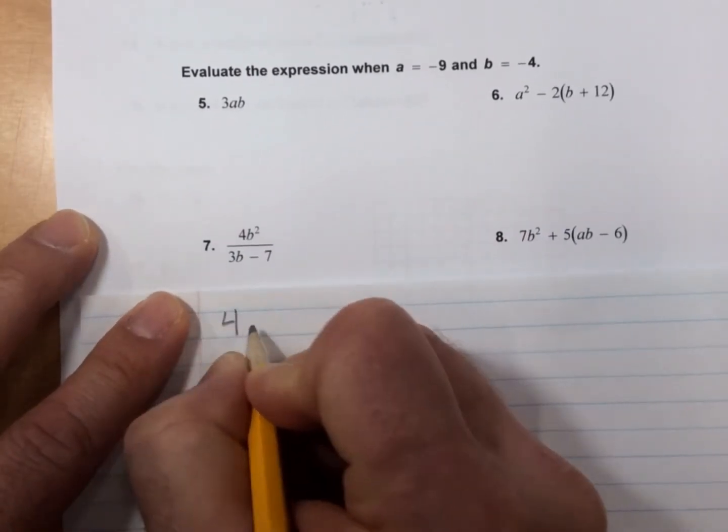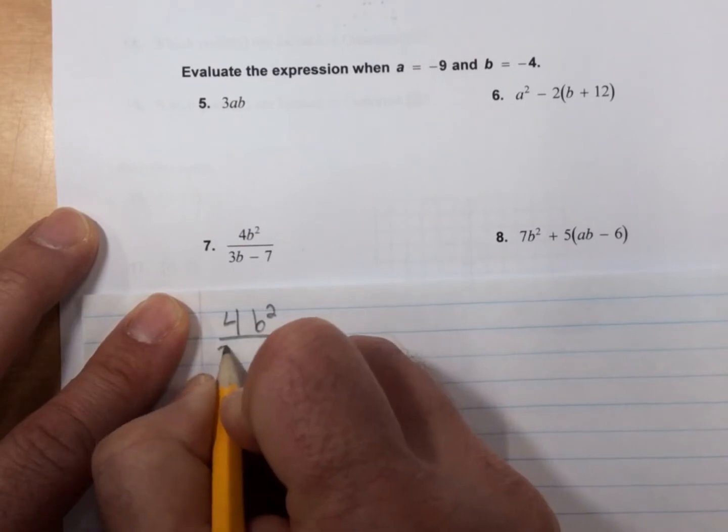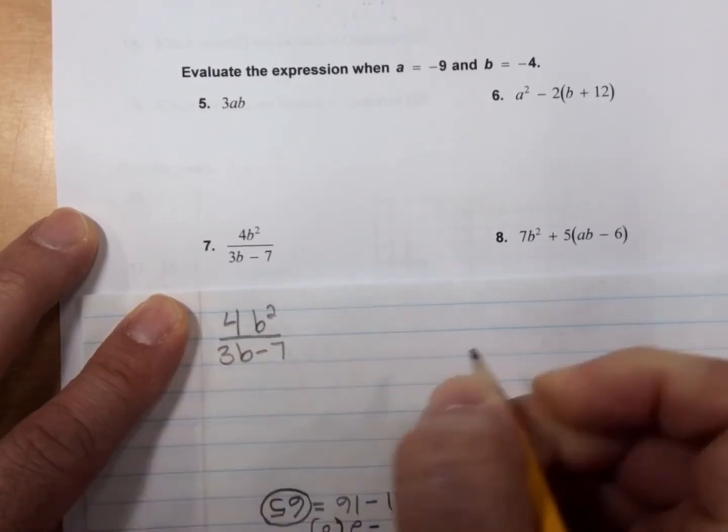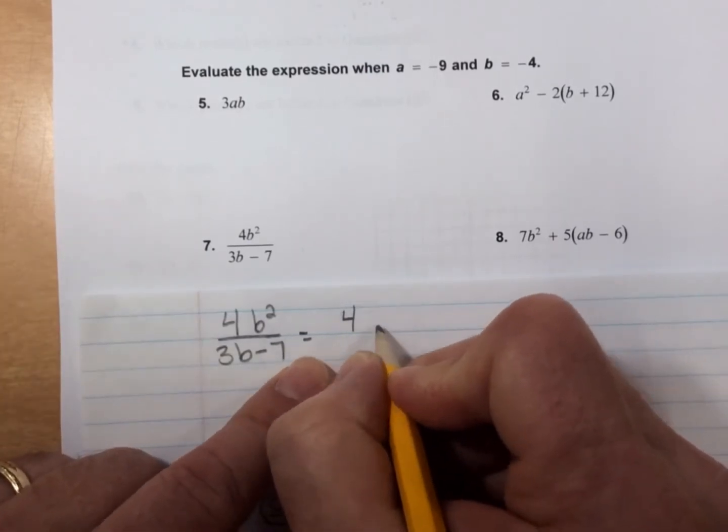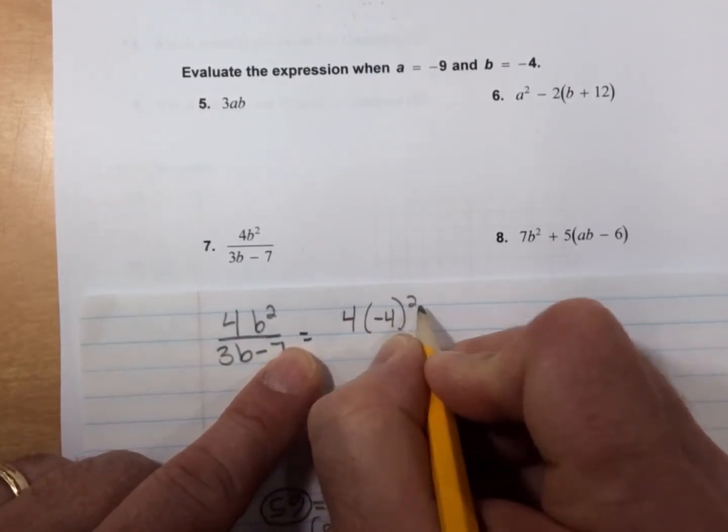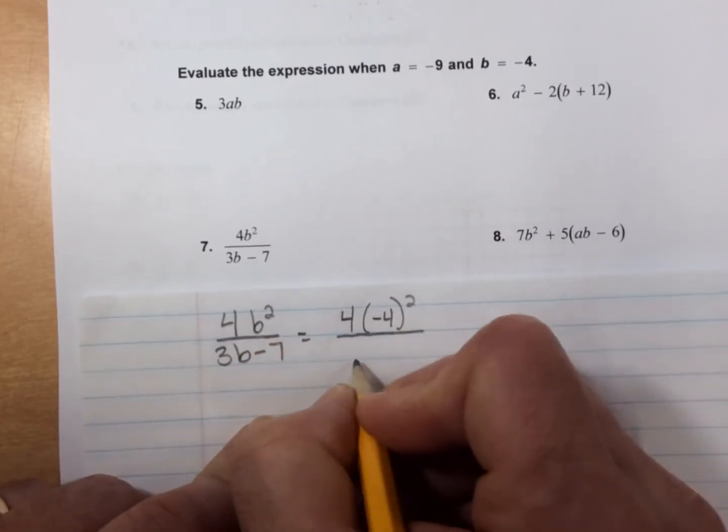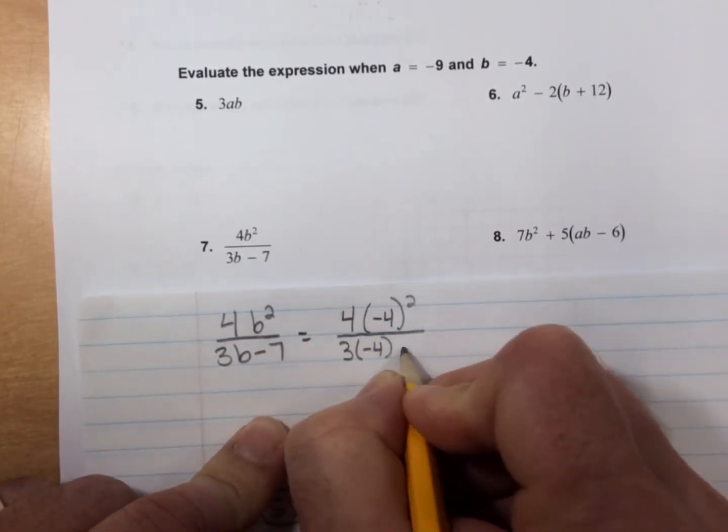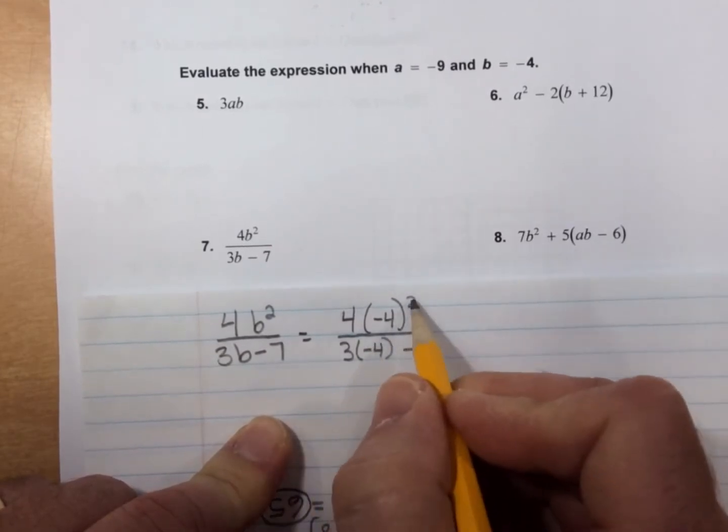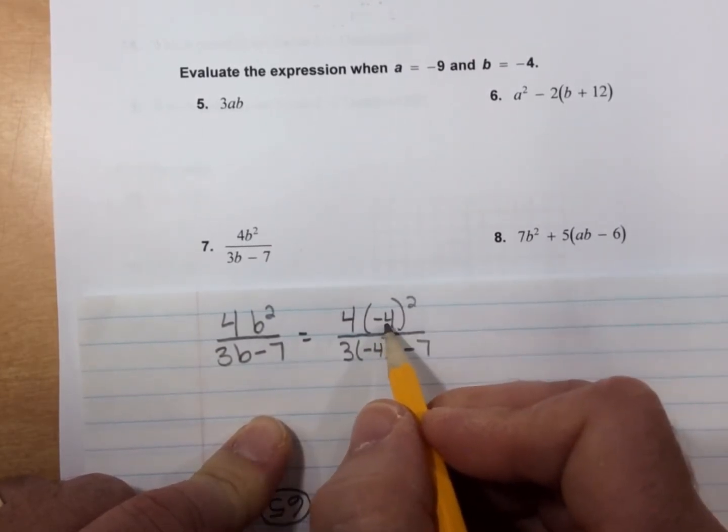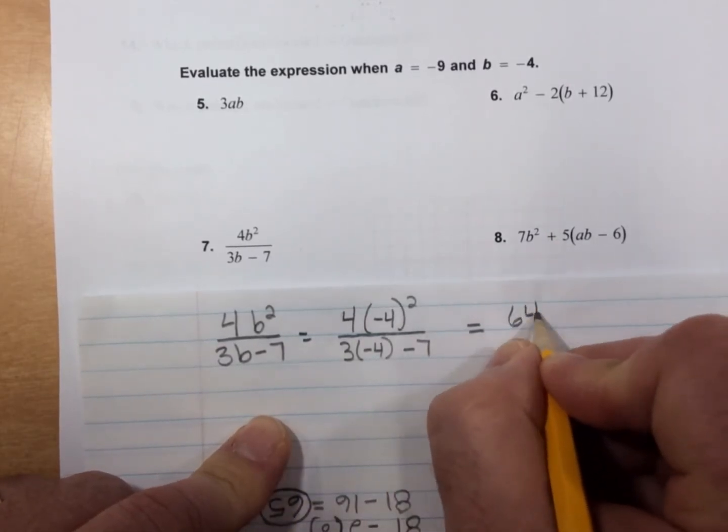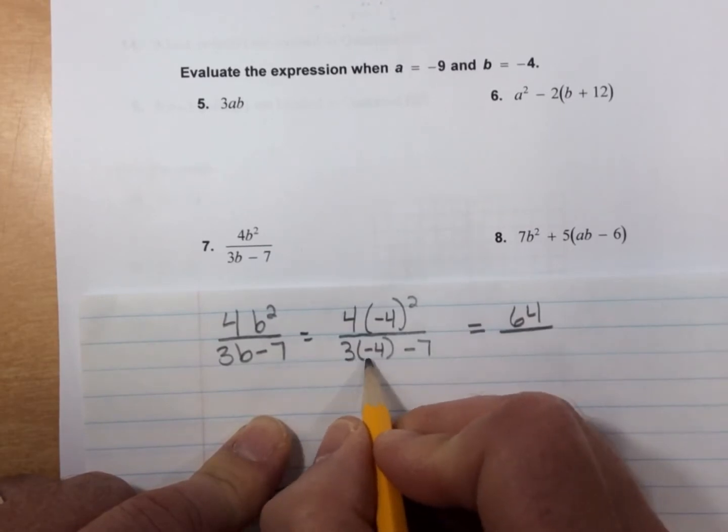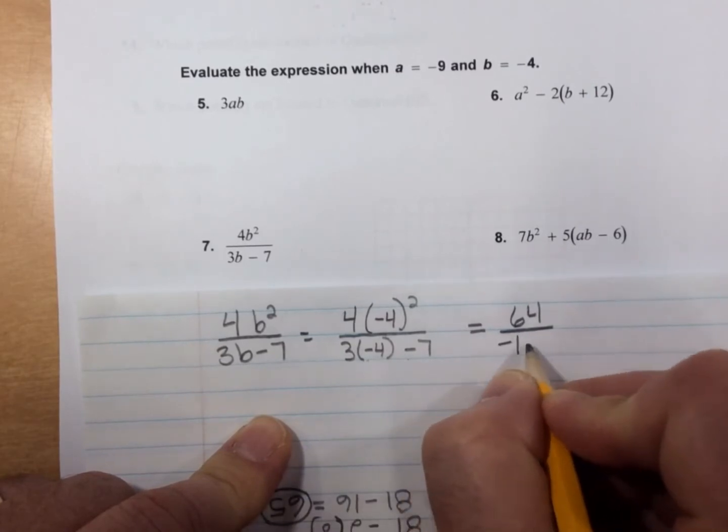For number 7, 4b² over 3b - 7 is 4(-4)² over 3 times -4 minus 7. Well, -4 squared is positive 16. And 16 times 4 is 64. 3 times -4 is -12. And -12 minus 7 is -19.